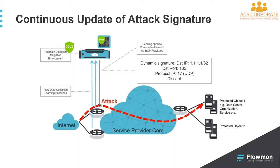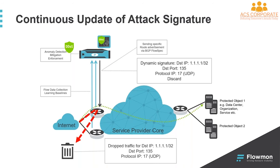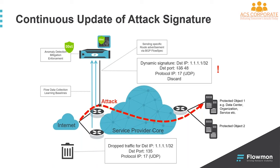When the rule is applied on the router, the router starts to drop the traffic. Now the attacker checks the victim and sees that his website is still available, so he changes the attack to try to bypass the protection. In this example, the attacker changes the destination port. This is something which we are able to detect with this new feature — we update the signature of the attack and push another BGP flow spec rule into the router, and the router is able to drop that traffic too.